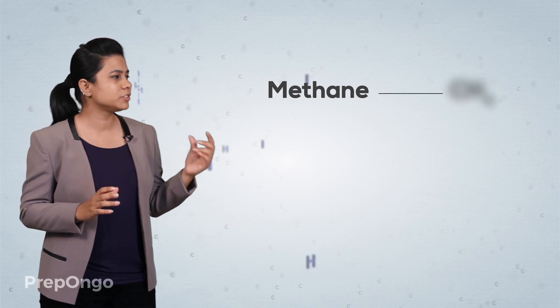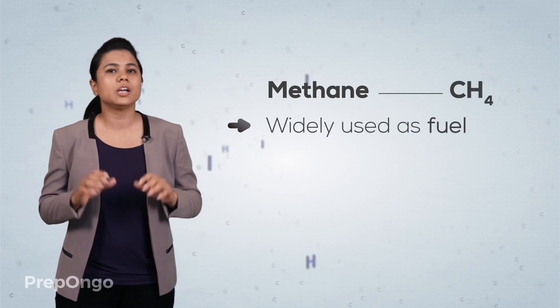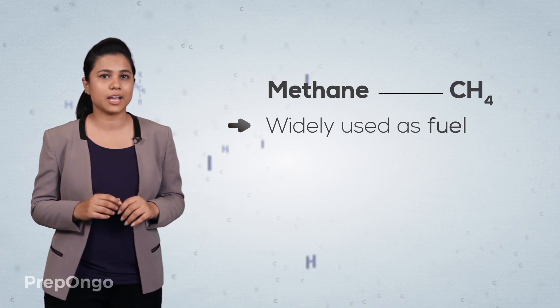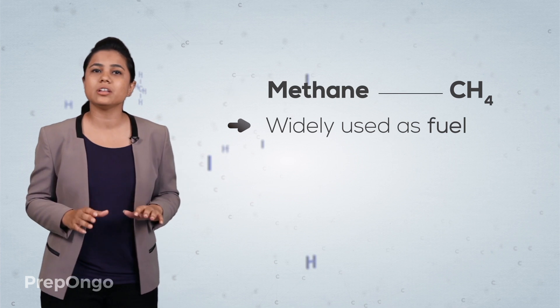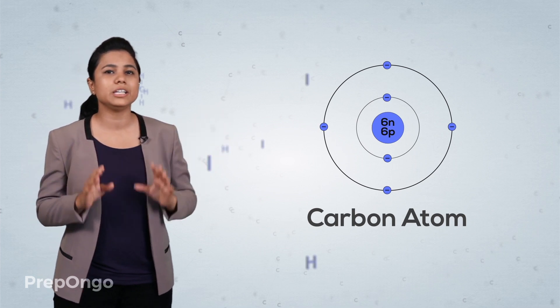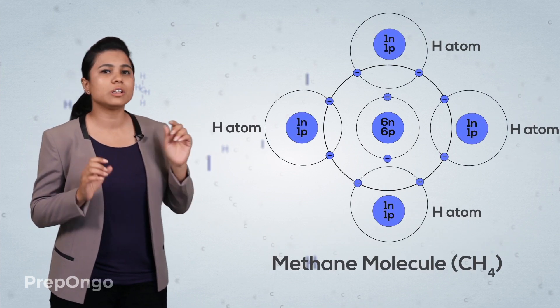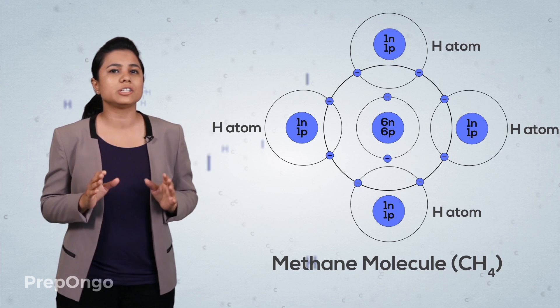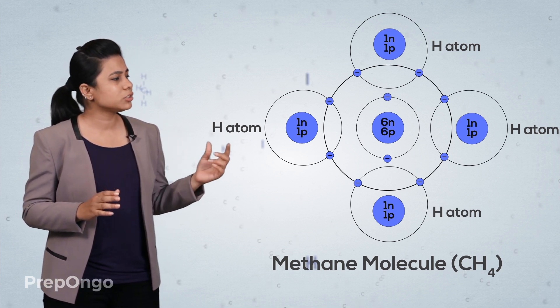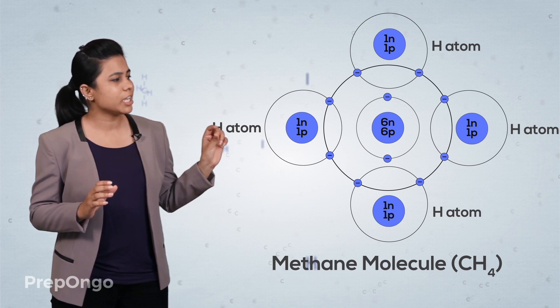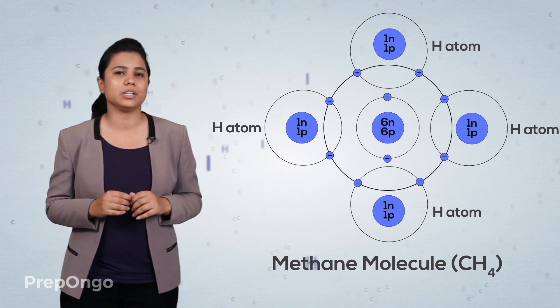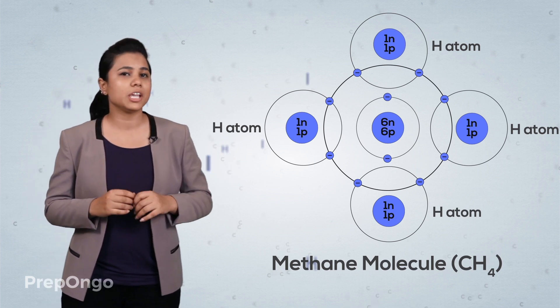Now we will study our first carbon compound, which is methane, with formula CH₄. Methane is widely used as fuel in the form of biogas and compressed natural gas (CNG), and it is also the simplest carbon compound. Carbon needs four electrons to stabilize itself, so it shares one electron each with four hydrogen atoms. Each hydrogen atom also shares one electron with carbon to gain stability, and from this the methane molecule is formed.